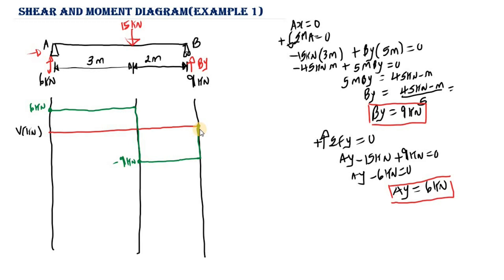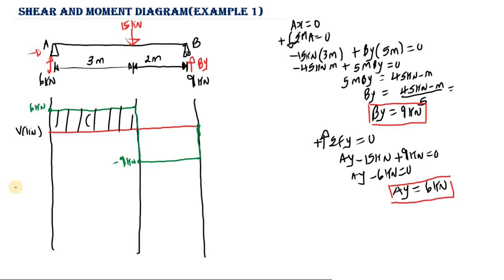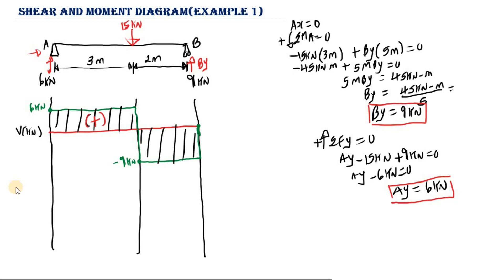When drawing the shear diagram, you need to start at zero and end at zero — the diagram must close up. Since we started at zero and ended at zero, our shear diagram is correct. If you start at zero and end at a non-zero value, there is an error. The left region is a positive shear zone and the right region is a negative shear zone.